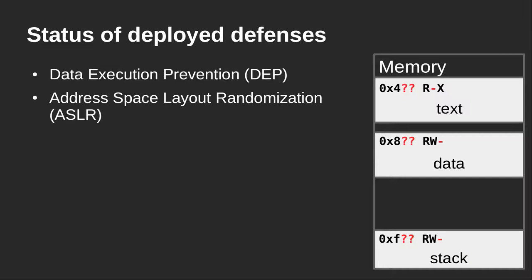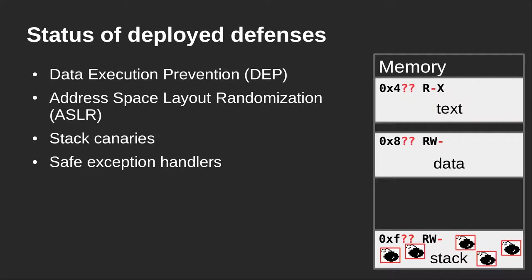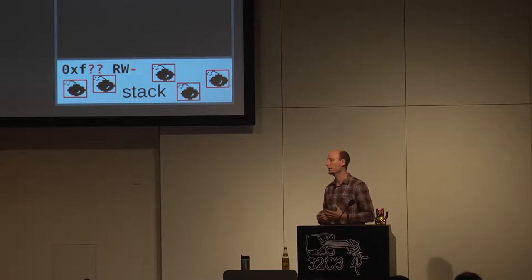Obviously ASLR is prone to information leaks — if the attacker can somehow learn where individual locations are, they can build an exploit that mitigates these defenses. We also have stack canaries that place strategic values on the stack that should not be overwritten, and safe exception handlers that guarantee exceptions follow a predefined pattern. But as we see with all the successful exploits on current software, these defenses are not complete — at best they are partial and make attacks a little harder, but they do not stop attacks.